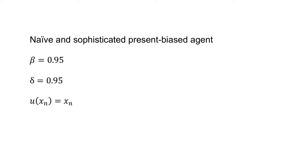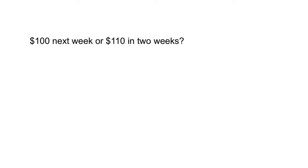For the first example, suppose we have a naive and a sophisticated present biased agent, each with beta equals 0.95, delta equals 0.95, and utility each period of u(xn) equals xn. We offer them both the following choice: would you like $100 next week or $110 in two weeks?